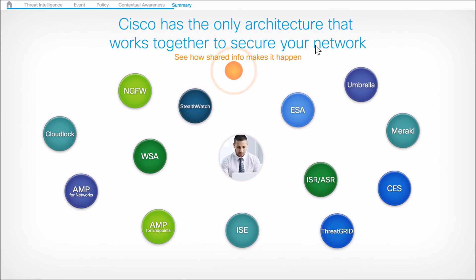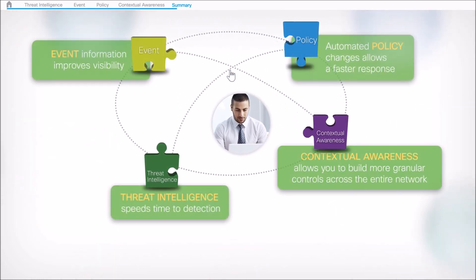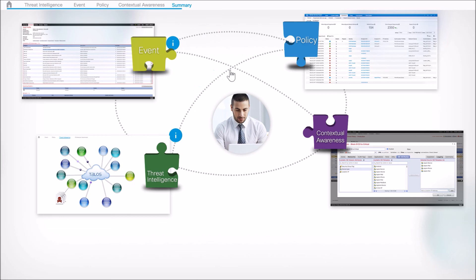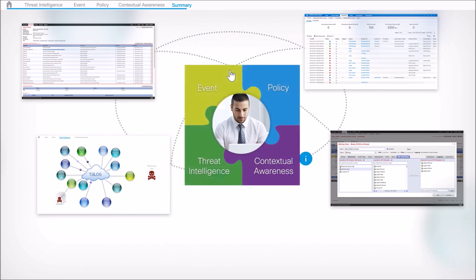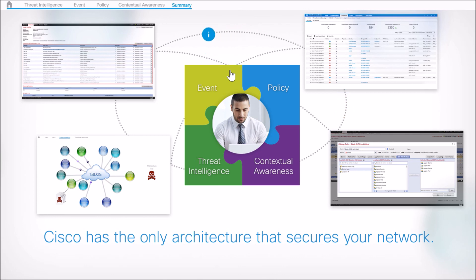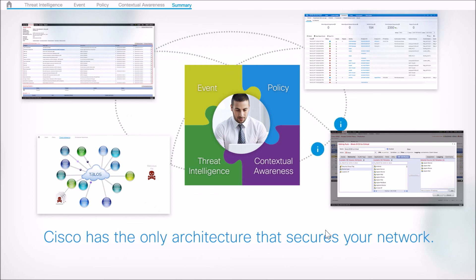You can see it's a fairly robust platform that integrates well together. You can start with a point product requirement like a next-gen firewall and build from there toward things like AMP for Endpoints. We provide event information that improves visibility, automated policy changes that allow for faster response, threat intelligence that speeds time to detection, and contextual awareness that enables more granular controls across the entire network. Cisco is really the only vendor providing this comprehensive security architecture in the industry today.